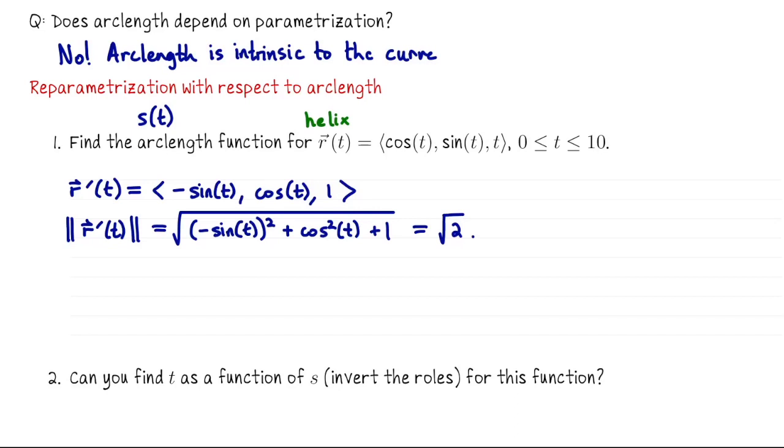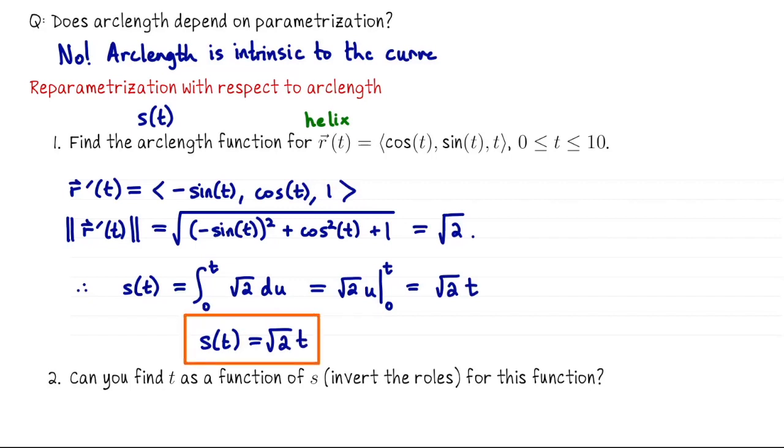Now to find the arc length function, I'm going to integrate the speed from 0 to t. It has the integral from 0 to t of the speed, which was actually a nice constant, square root of 2 du. So then we anti-differentiate, we get square root of 2 u evaluated from 0 to t. So overall that's going to be the square root of 2 t. In the description s of t equals the square root of 2 t, this is a function of t. So we can think of t as the independent variable, s as the dependent variable. So given a value of t, we plug it in and we get s.